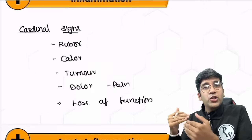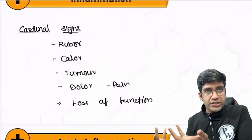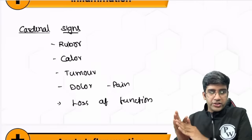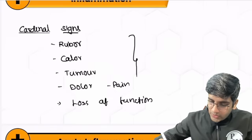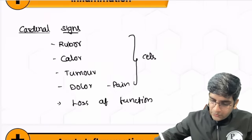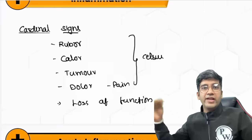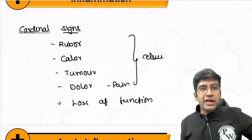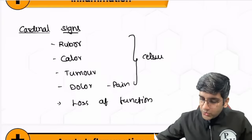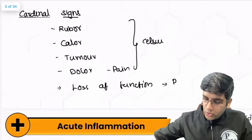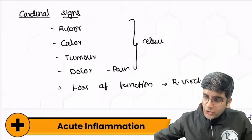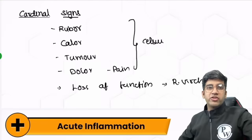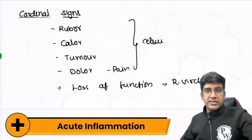You have arthritis, you cannot walk properly — it's also a loss of function. It can be an internal organ or a physical organ. All these signs were given by a person called Celsus — they are called Celsus signs of inflammation. The first four were given by Celsus. The fifth, Functio Laesa, was given by Rudolf Virchow, the father of modern pathology. These are the major cardinal signs of inflammation.